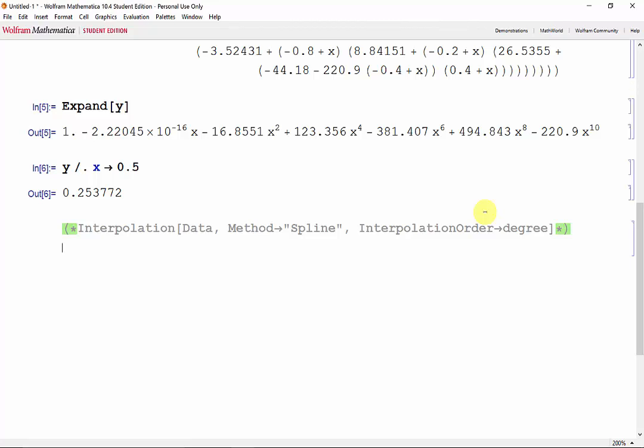So if we wanted to make constant, linear, quadratic, or cubic splines, we would just use the interpolation function. So for a 0 degree, or a constant interpolation, it would be interpolation, the data, and then interpolation order 0. For the constant interpolation, we don't need to define a method, because there is only one method for constant interpolation.